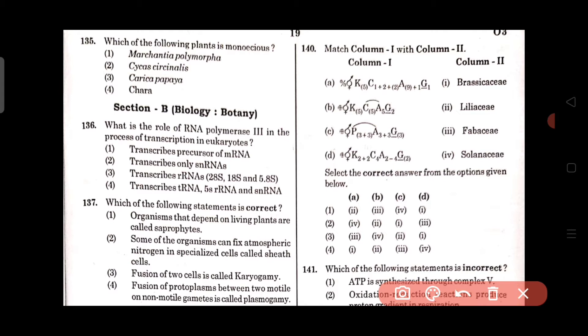Question number 136: What is the role of RNA polymerase 3 in the process of transcription in eukaryotes? Options are transcribes precursor of mRNA, transcribes only SNRNAs, transcribes rRNAs, transcribes tRNA, 5S RNA and 8N rRNA. The correct answer is option number 4.